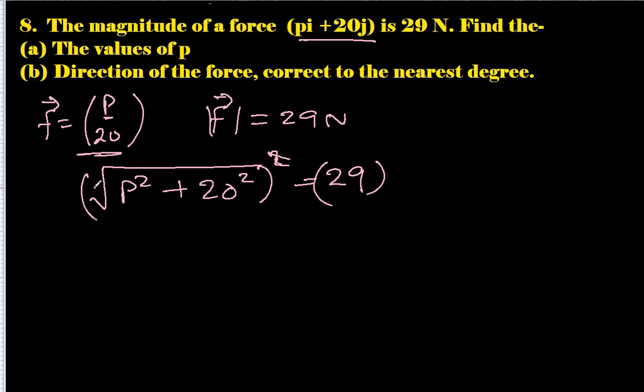So it will be p² + 20² = 29. So square both sides.